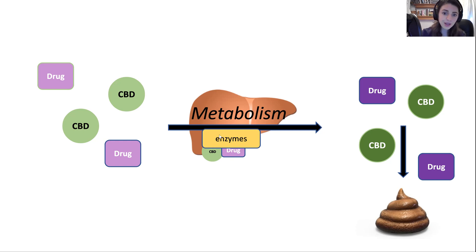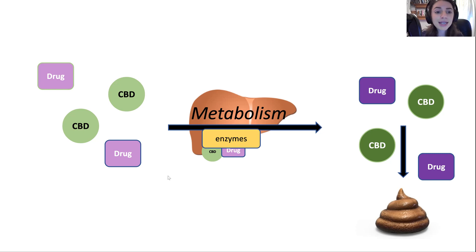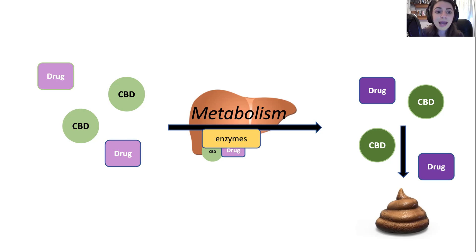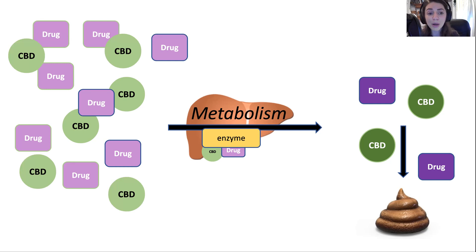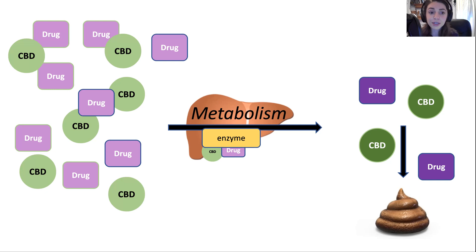CBD is still present and now a drug is also present in our blood — both need to get metabolized before they're excreted. Since six isozymes are responsible for metabolizing 90% of drugs, the likelihood of one isozyme having to metabolize multiple things is very high, and that compounds based on how many medications you're taking. Now both substances need to get metabolized by the same enzyme, which affects efficiency — this creates a bottleneck. The enzyme can't work fast enough, resulting in an altered concentration in your blood.